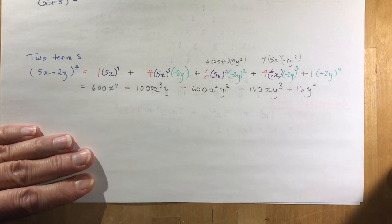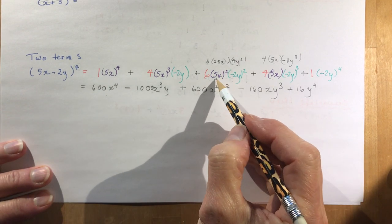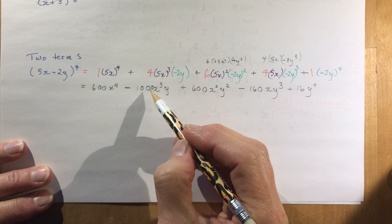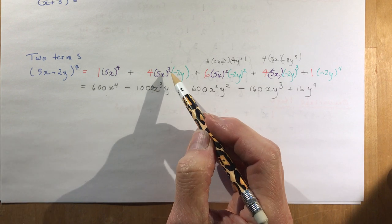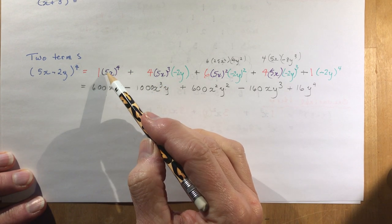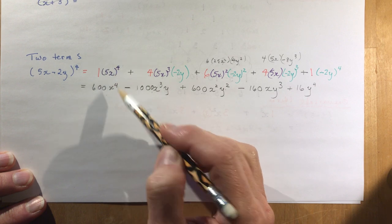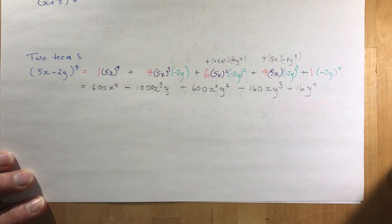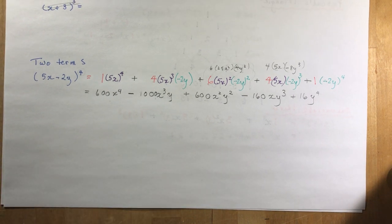That's all you have to do in this lesson. It's not too difficult — just be really careful with simplifying. Make sure you put bracketed terms in brackets and raise the whole thing to the power. Remember: (5x)⁴ means 5x multiplied by itself four times — 5 must be raised to the power 4 as well. That's the end of the chapter on Pascal's triangle.